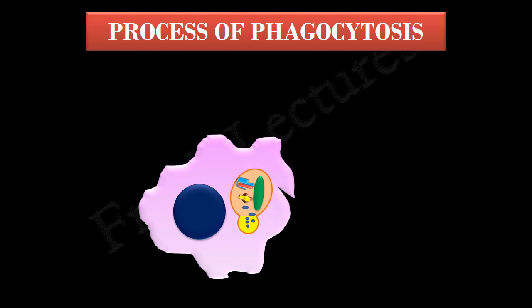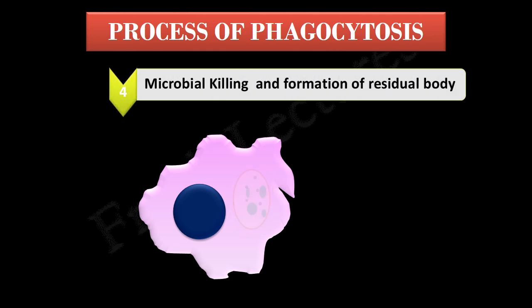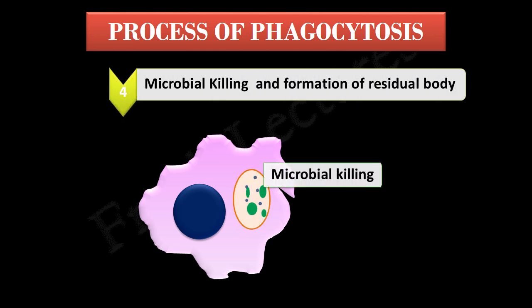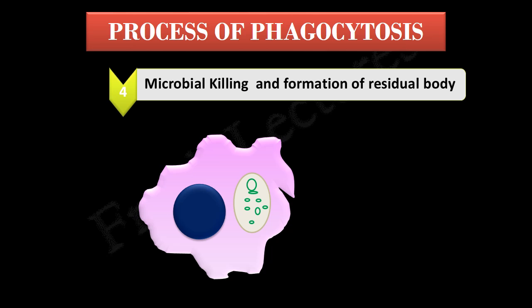The resulting phagolysosome has an acidic environment, and a variety of enzymes are contributed by lysosomes — such as lipases, nucleases, proteases, and lysozyme. Together, these enzymes and the acidic environment result in destruction of the internalized microbe. Once killing and digestion of the engulfed microbial cell happens, only indigestible material remains in the sac, and this sac containing the indigestible material is known as the residual body.